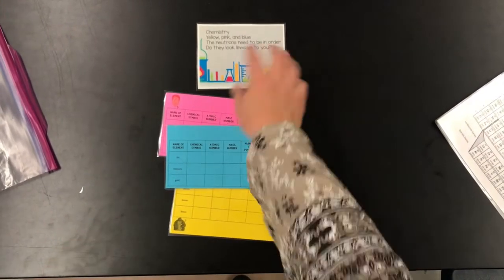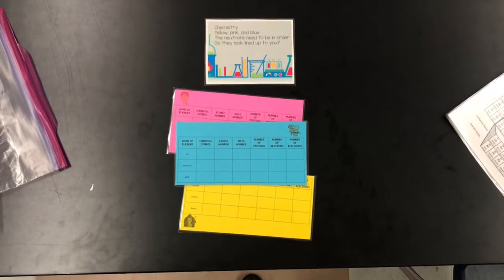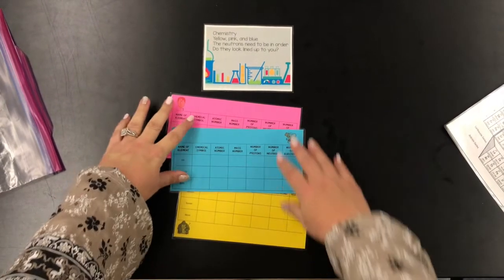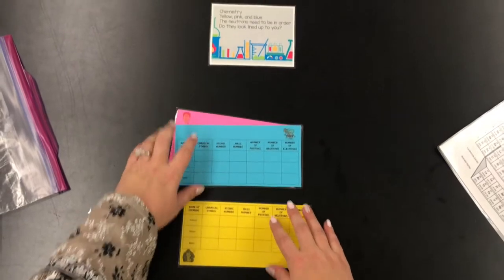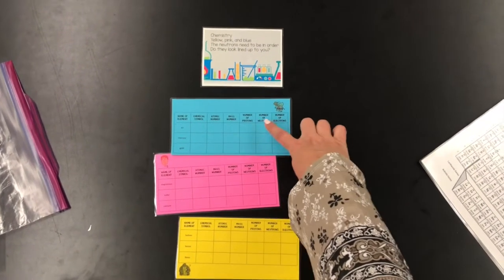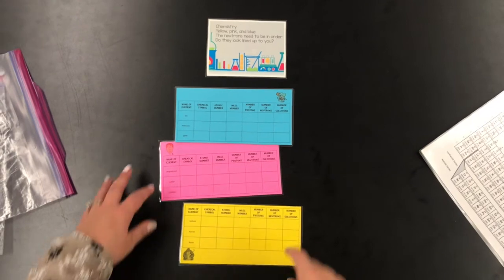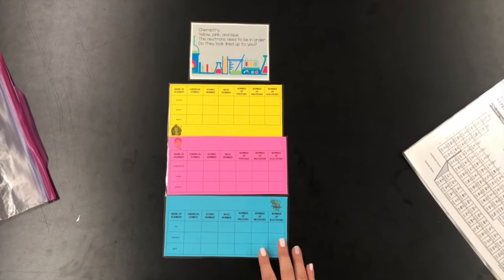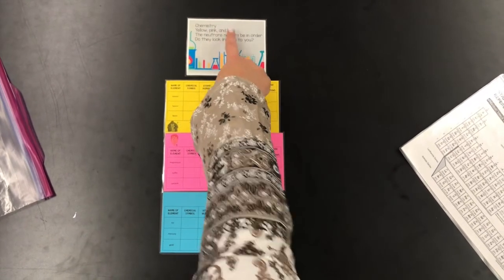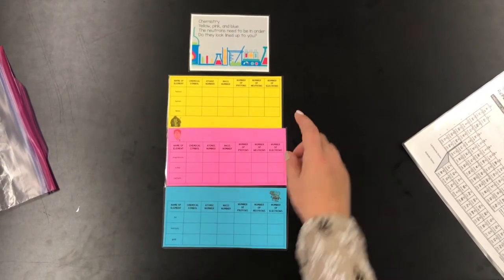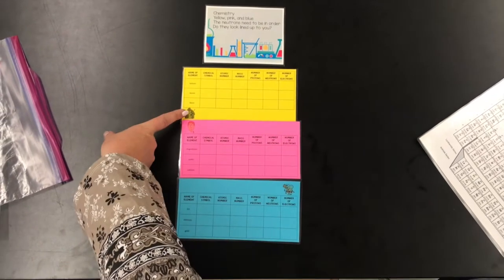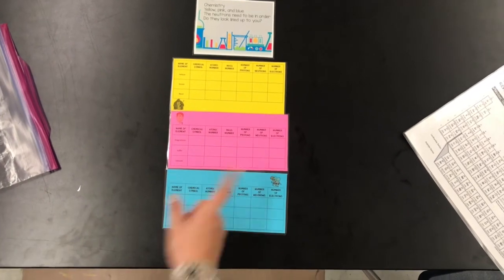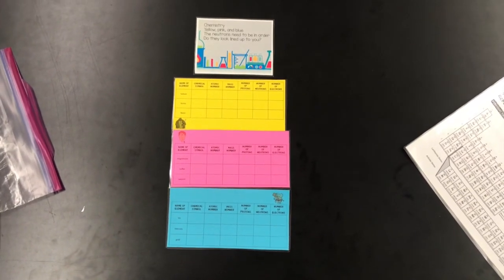Using the clue card, it says chemistry, yellow, pink, and blue. The neutrons need to be in order, do they look lined up to you. So when you complete the table, the neutrons will go in order from least to greatest, with yellow being first, pink being next, blue being last, as you can see from the riddle card. Then here we have ape man and a cave man, and sitting on the picture is the three digits for your three-digit lock.